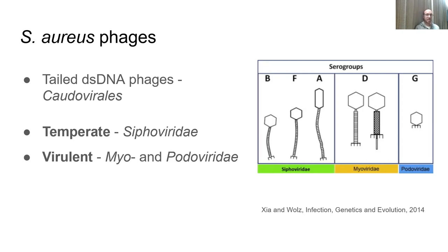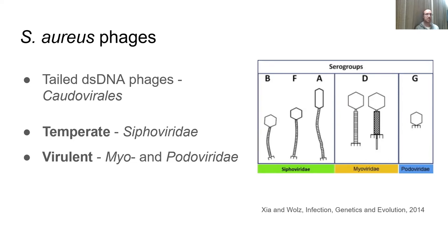The Siphoviridae are named tube viruses because they have long, flexible, non-contractile tails a couple hundred nanometers in length. The Myoviridae, or muscle viruses, have long, contractile, inflexible tails, while the Podoviridae have nearly non-existent tails, just tail fibers extending down, and these are named foot viruses.